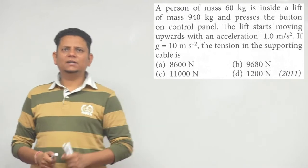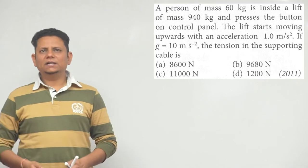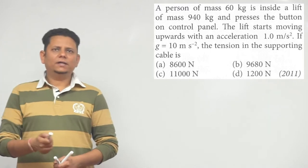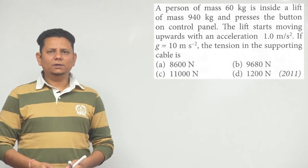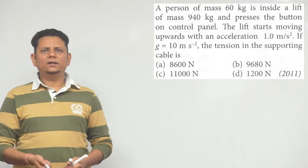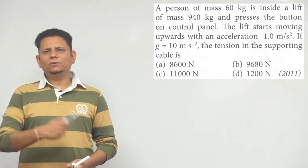The lift starts moving upwards with an acceleration of 1 meter per second square. If G is given as 10 meters per second square, we have to find the tension in the supporting cable. The options are 8600 newton, 9680 newton, 11000 newton, or 1200 newton.